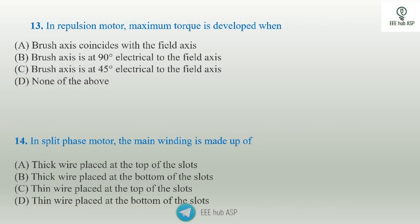Repulsion motor: the maximum torque is developed in a repulsion motor when the stator winding is connected to an AC source. The armature has a commutator with brushes short-circuited. The maximum torque is developed when the brush axis is at 45 degrees to the field axis — Option C.